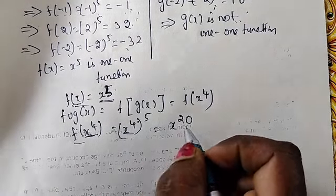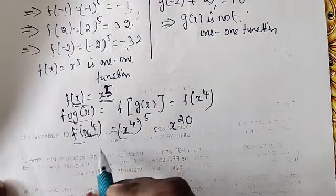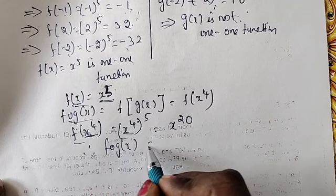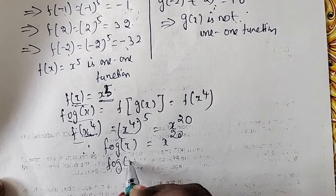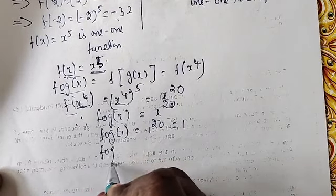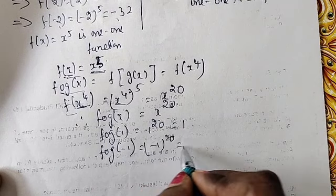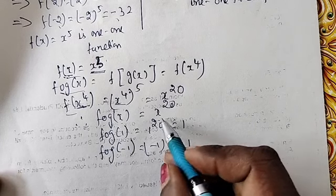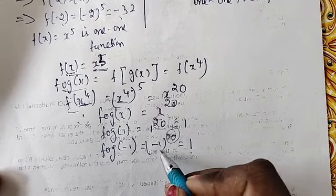So fog(x) = x^20. Therefore fog(x) = x^20. Now fog(1) = 1^20 = 1, and fog(-1) = (-1)^20 = 1, because the positive and negative both raised to the power 4 give 1.